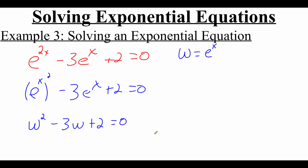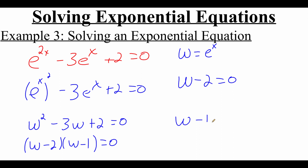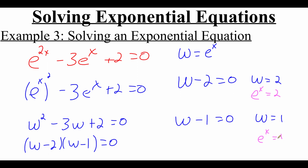This is actually a factorable quadratic. I can factor this into w minus 2 times w minus 1 equals 0. Then I take each one of these factors and set it equal to 0, giving w minus 2 equals 0 and w minus 1 equals 0. Solving those, w equals 2 and w equals 1. But I have to remember that w represented e to the x, so I plug that back in. This gives e to the x equals 2 and e to the x equals 1. I'm not done solving yet — I have to take these and turn them into logarithms. So the first one becomes the natural log of 2 equals x, and the second one becomes the natural log of 1 equals x.